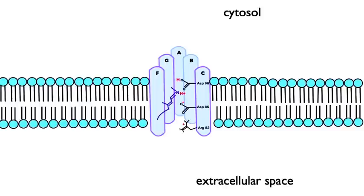Retinal is bound to a lysine residue in helix G and is shown here in the trans configuration, which is its protonated form. When protonated, it appears purple in color.